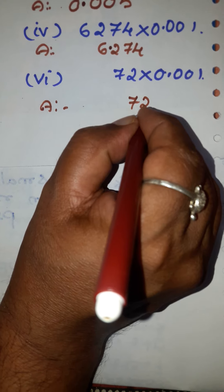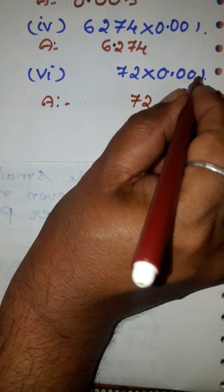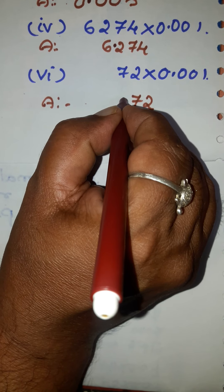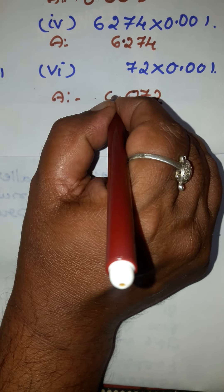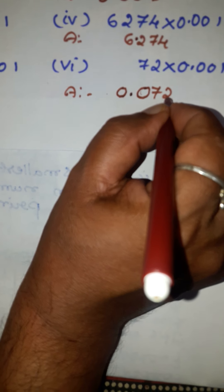Write 422 as it is. After the decimal there are three places. Move three from right to left — one, two, three — put the decimal point. It is customary to put a zero here. The answer is 0.422. Fourth example: you have 6274. After the decimal there are three places. Move three places right to left — one, two, three — put the decimal point. The answer is 6.274. Fifth problem: write 1674 as it is. Here you have three places to the right of the decimal point, so move three places — one, two, three — put the decimal point. The answer is 1.674.